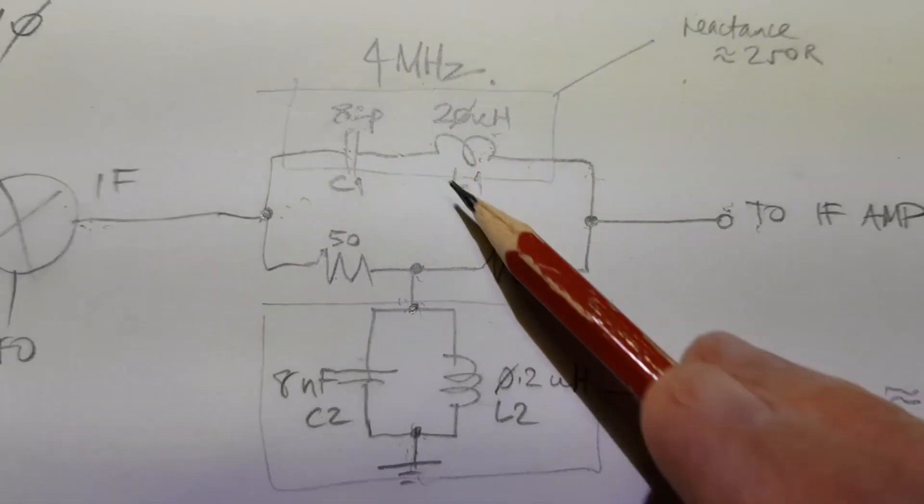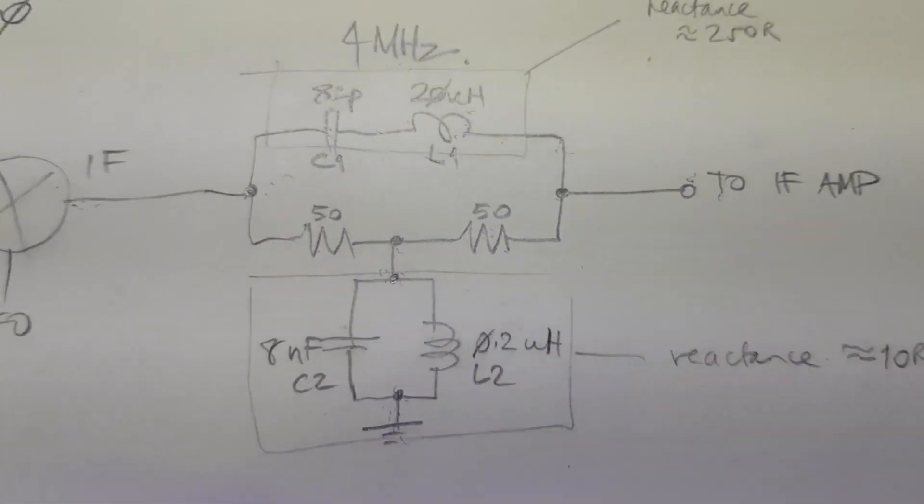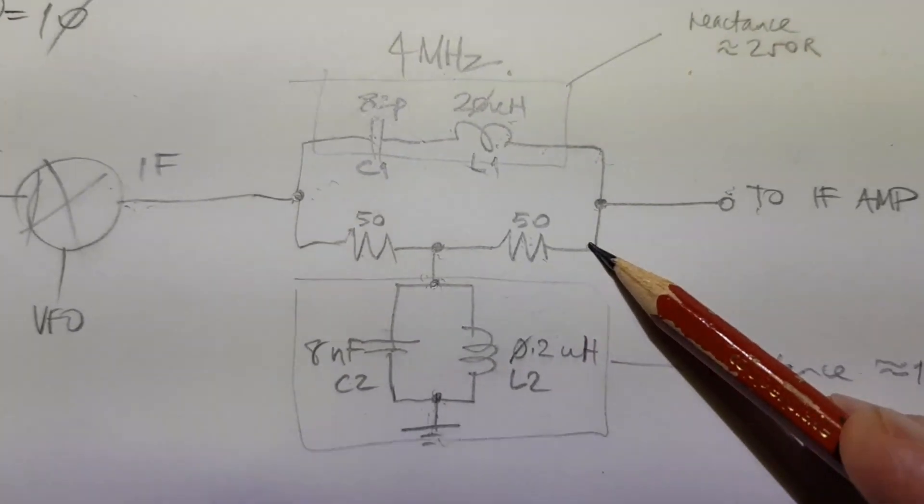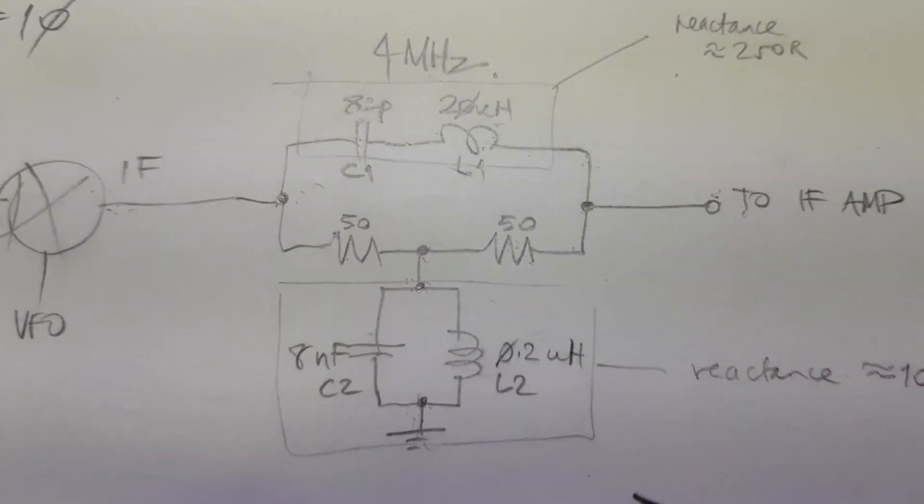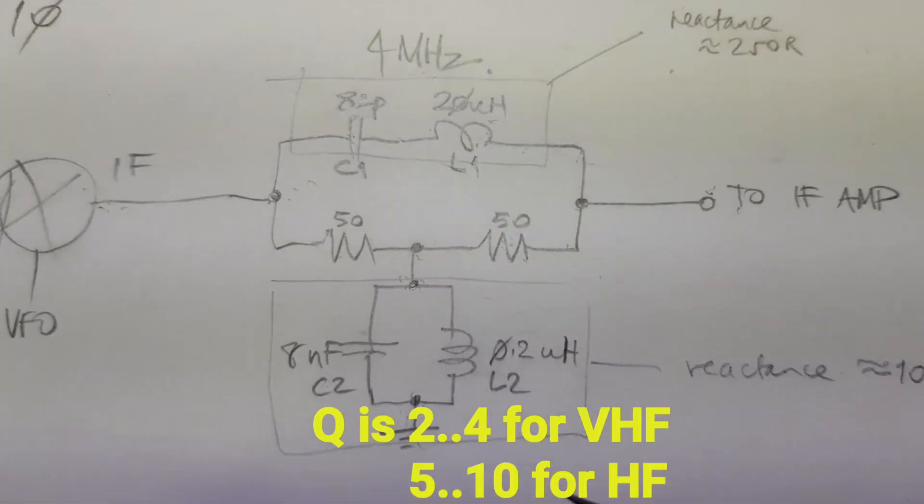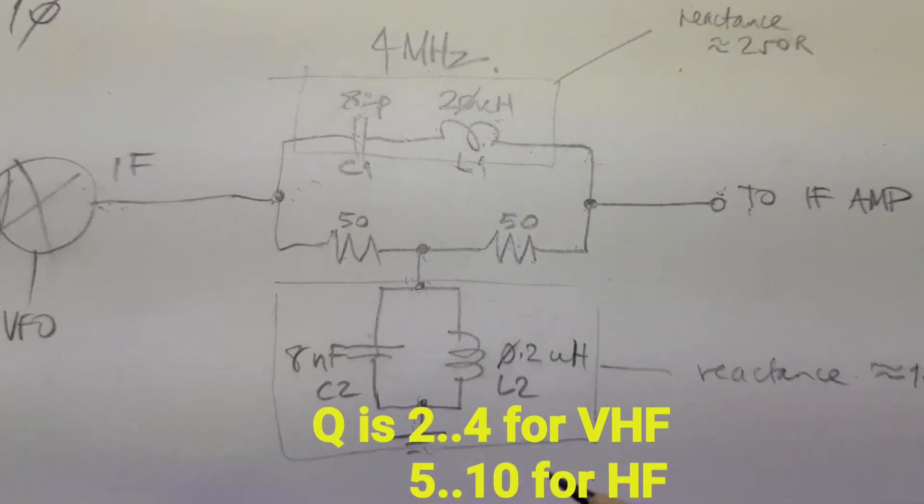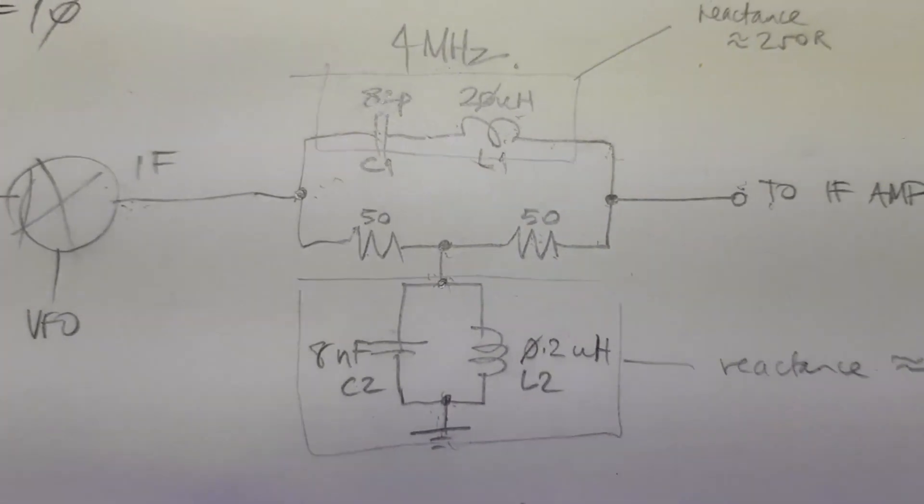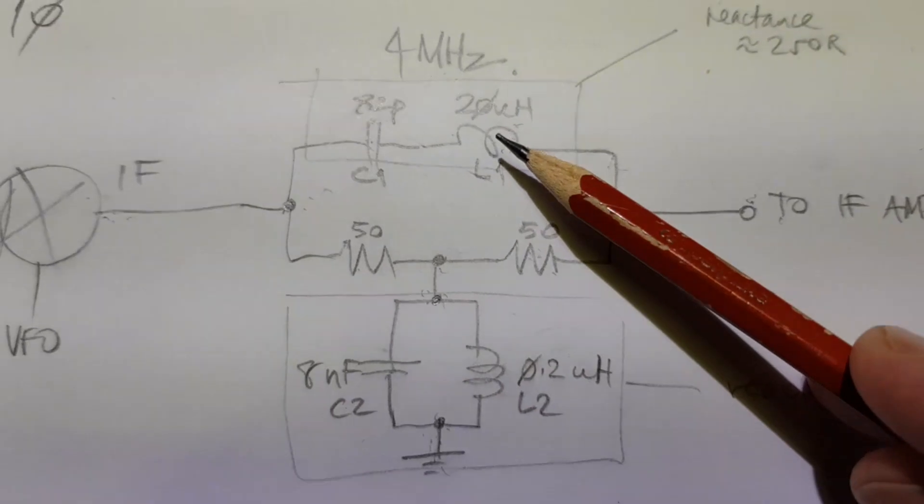Pretty simple. When you use the calculator, you need to provide a Q, and the Q is suggested to be between 2 to 4 and 10—2 to 4 for VHF and as high as you can get it to 10 for HF.